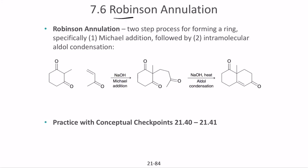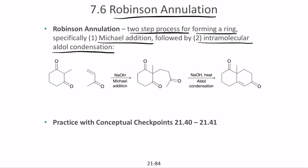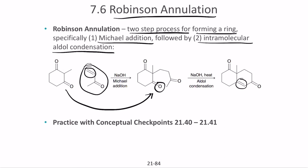Robinson annulation is a two-step cyclization process. It involves a Michael addition followed by an intramolecular aldol condensation, where the combined structure removes the oxygen and forms a double bond, ultimately attaching the double bond at the alpha carbon and forming a ring.